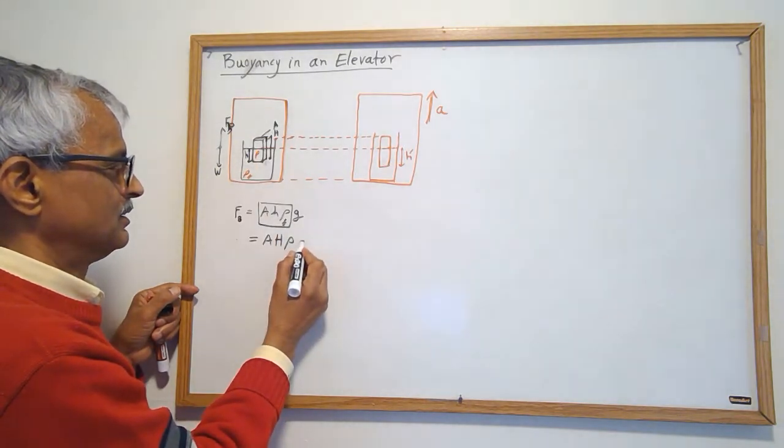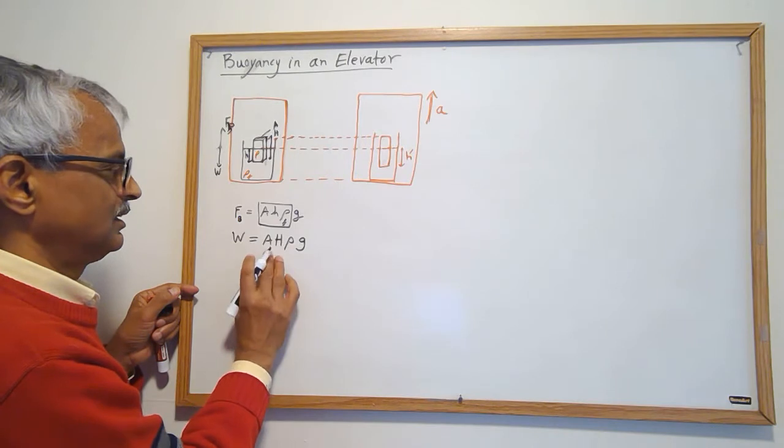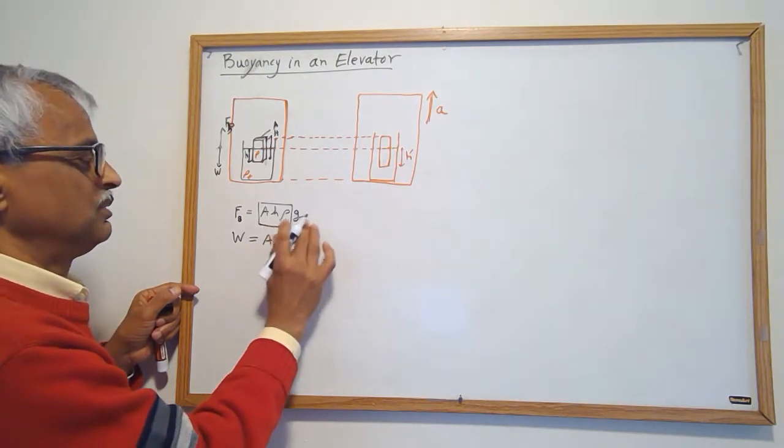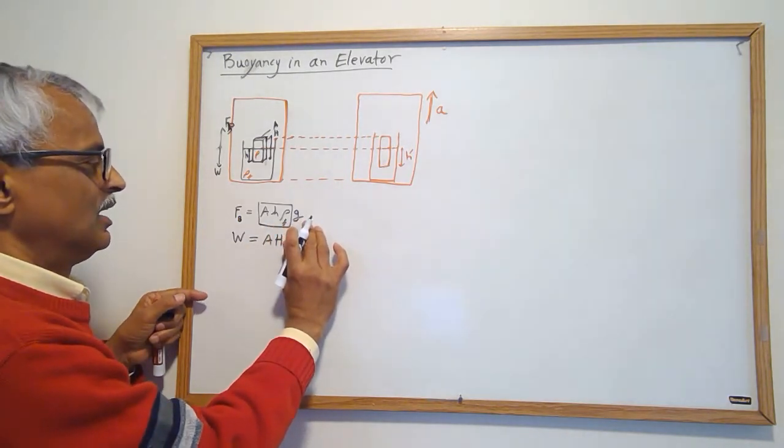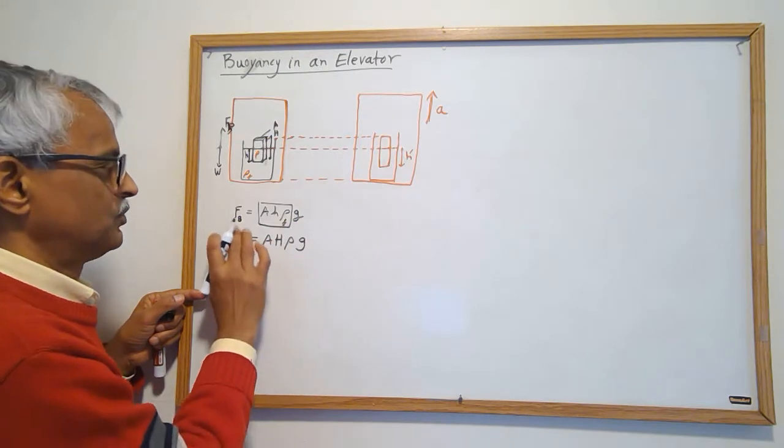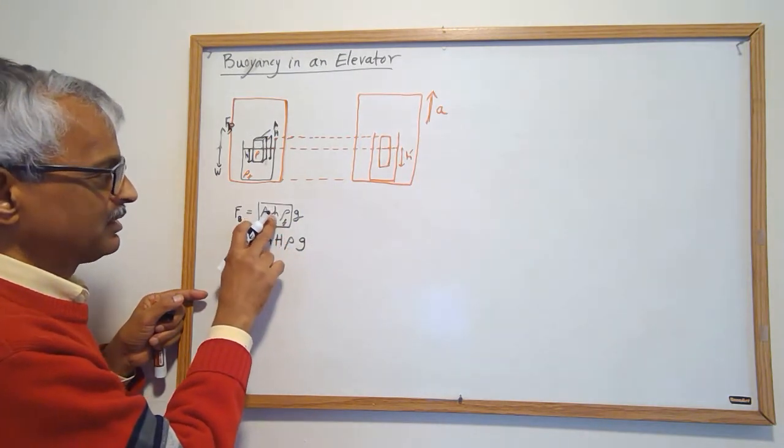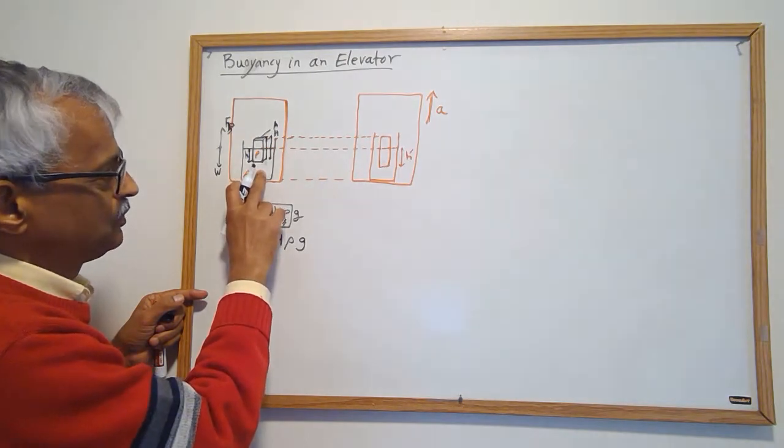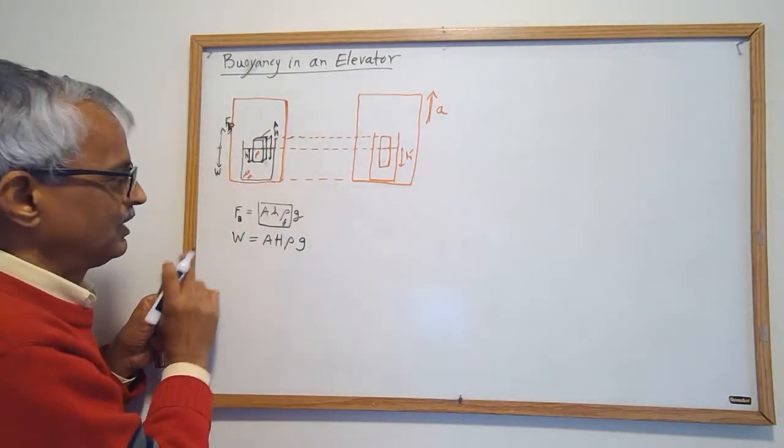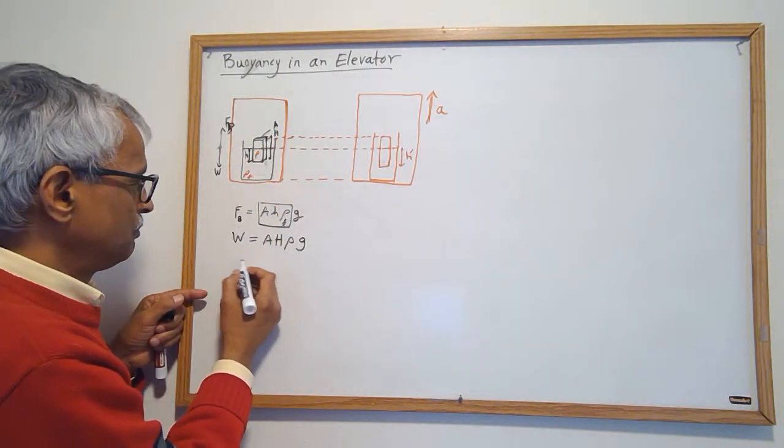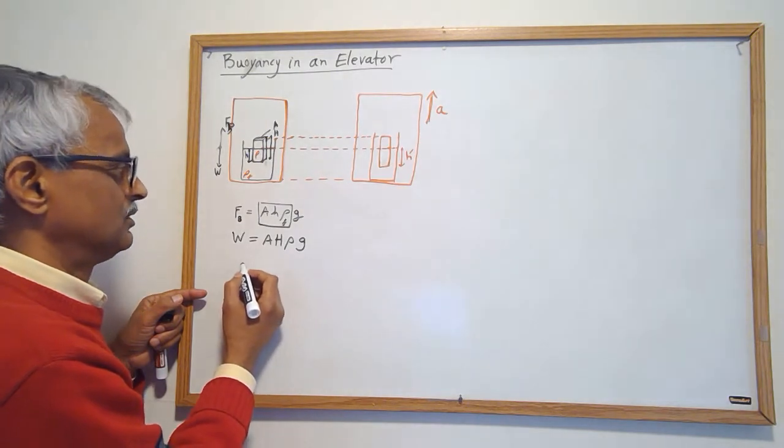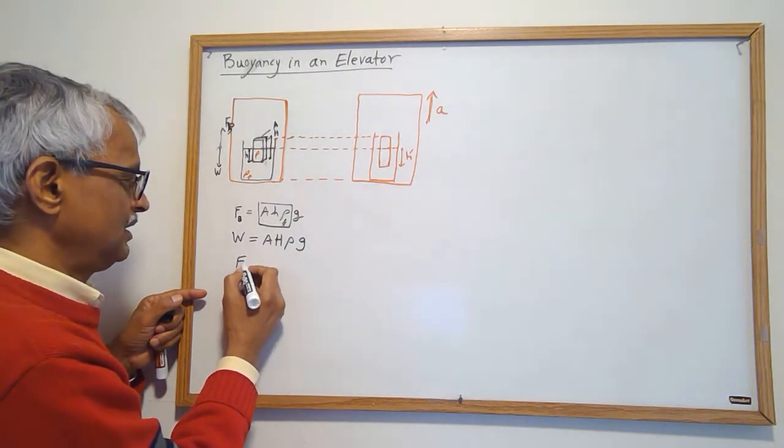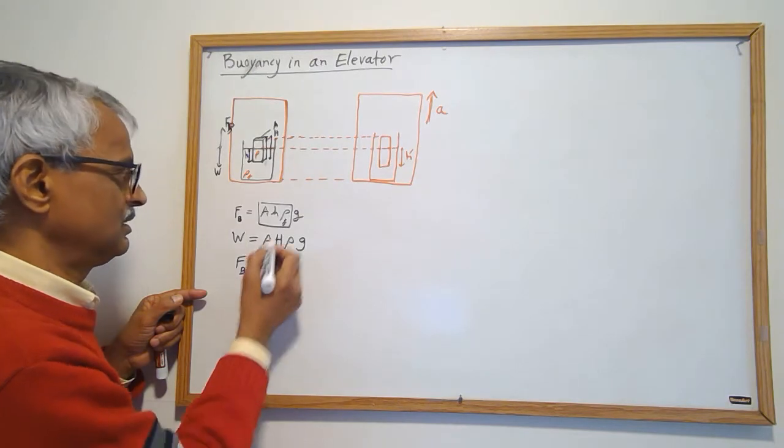So this must equal A times big H times ρ of the material times g. This is the weight that has been balanced by the force of buoyancy. Because it's only partially submerged, the density of fluid is more than the density of the material. But this is equal, they're equal right now, so Fb equals weight.